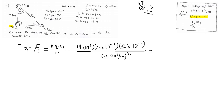Plugging into Wolfram Alpha: 9 times 10 to the 9, times 15 times 10 to the negative 6, times 32 times 10 to the negative 6, divided by 0.004 squared. Electricity is a powerful force — the constant is 10 to the positive 9, compared to gravity's 10 to the negative 11. Gravity is a weak force until you have something as large as a black hole, but electricity doesn't need much size to be strong. Our X-direction force is 270,000 Newtons.